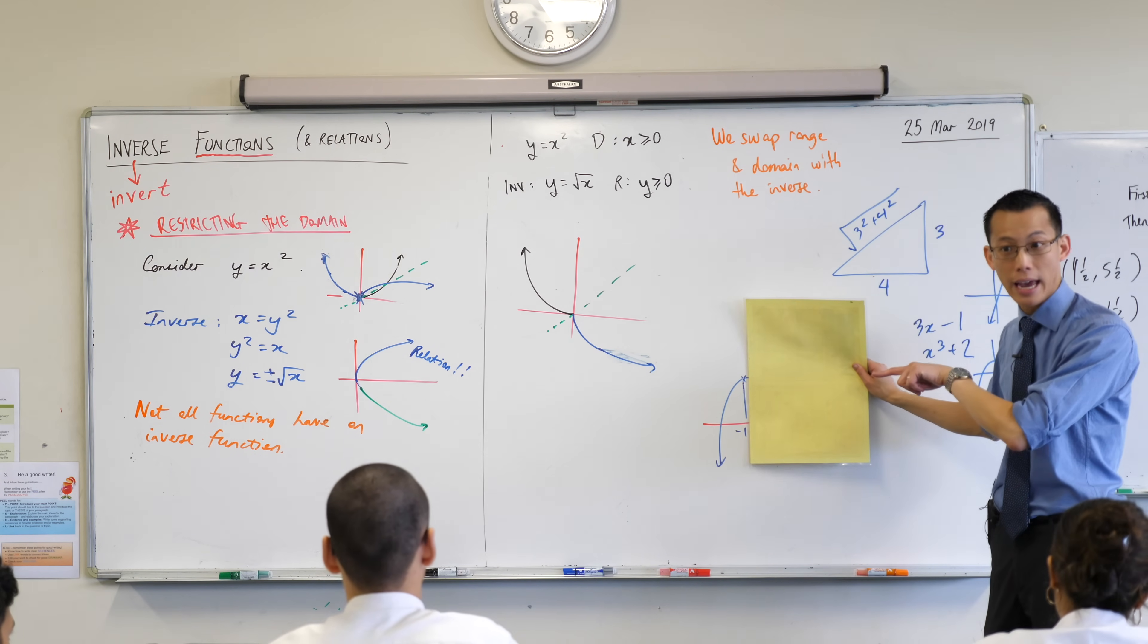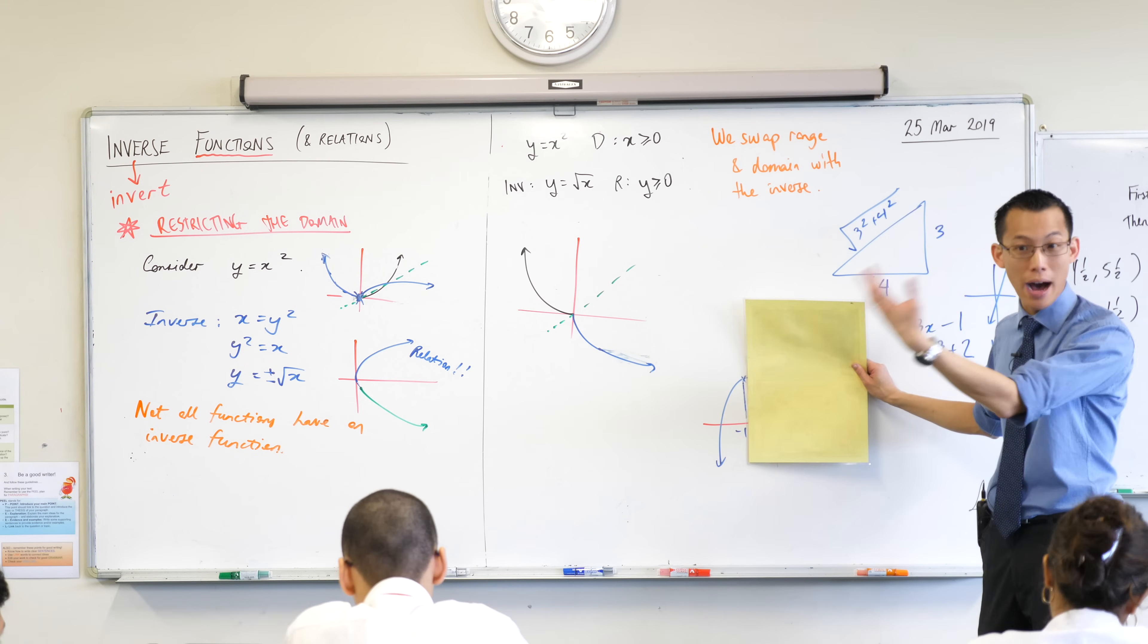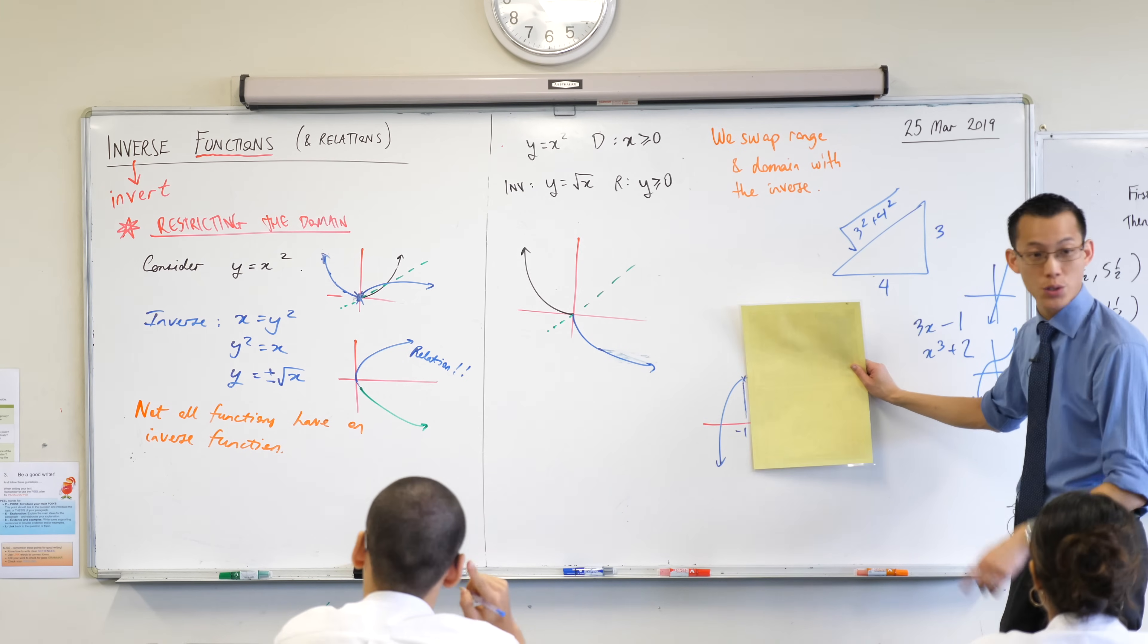If you did the reflection, that part would be okay. It fails, sorry. It passes the horizontal line test so when you flip it over, it'll pass the vertical line test. So this part's okay.